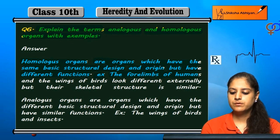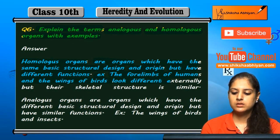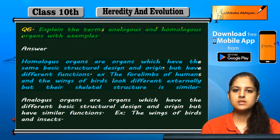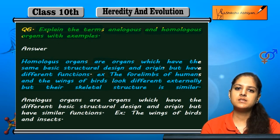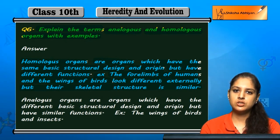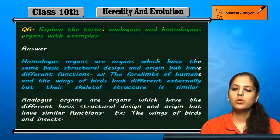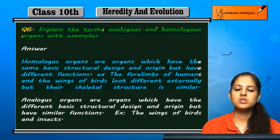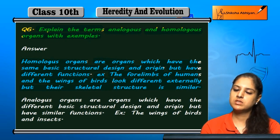For example, the forelimbs of humans and the wings of birds look different externally, but their skeletal structure is similar. If we look at the internal structure of human hands and bird wings, they are the same. However, their functions differ — wings help birds fly, while human hands help us grab things. So function is different but basic structure is the same.